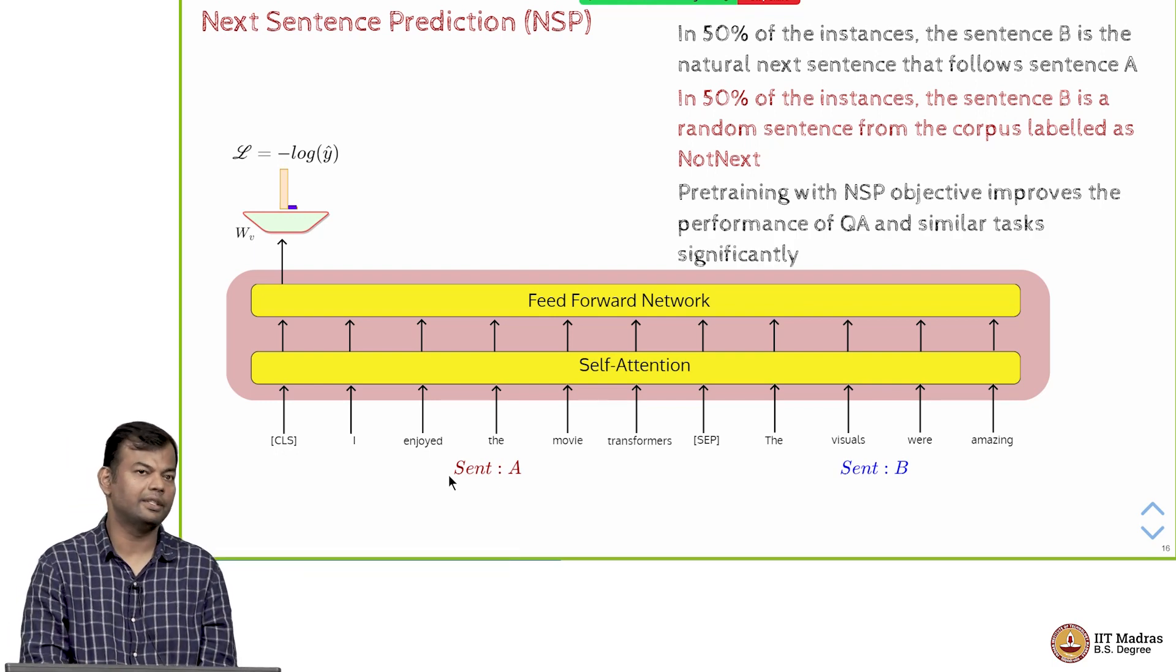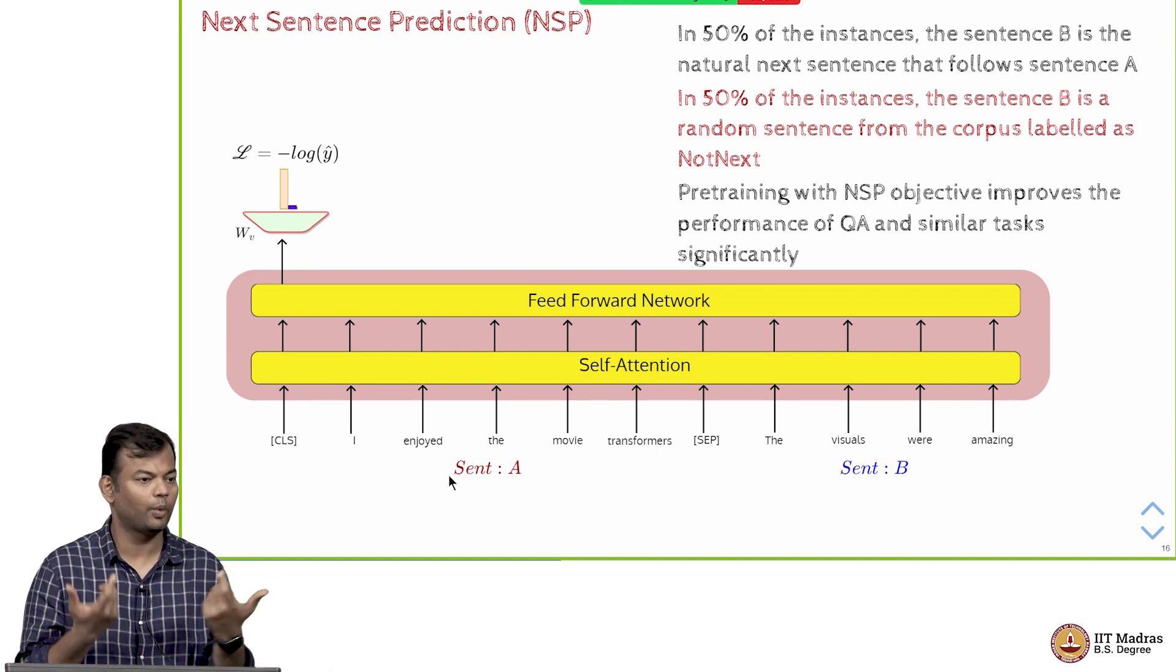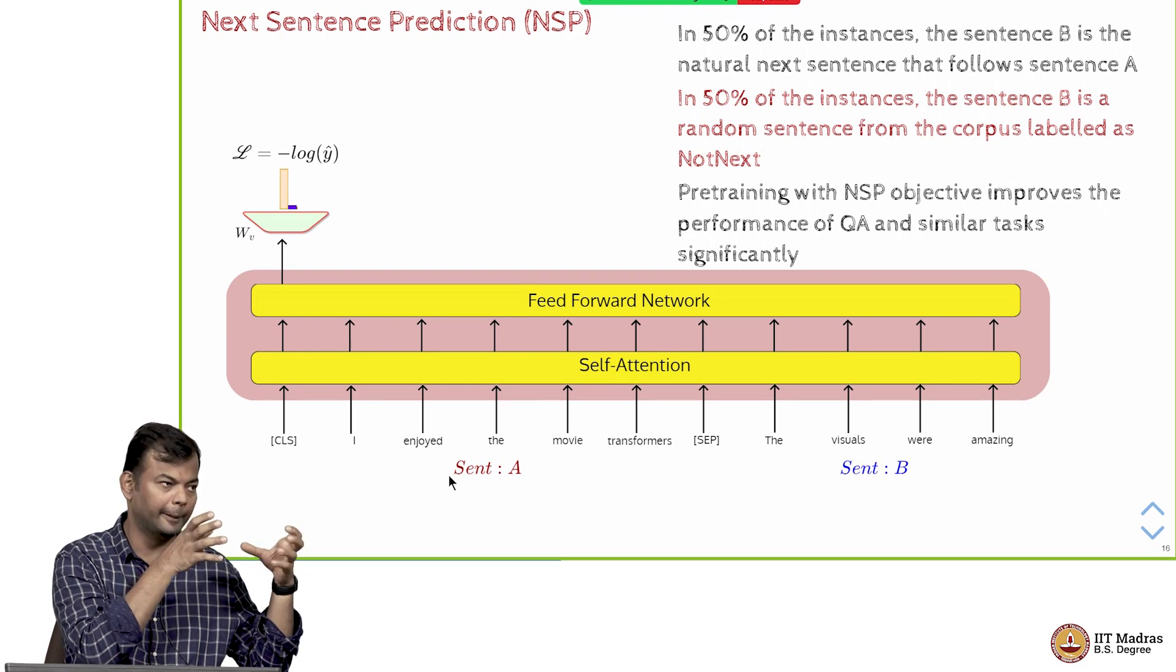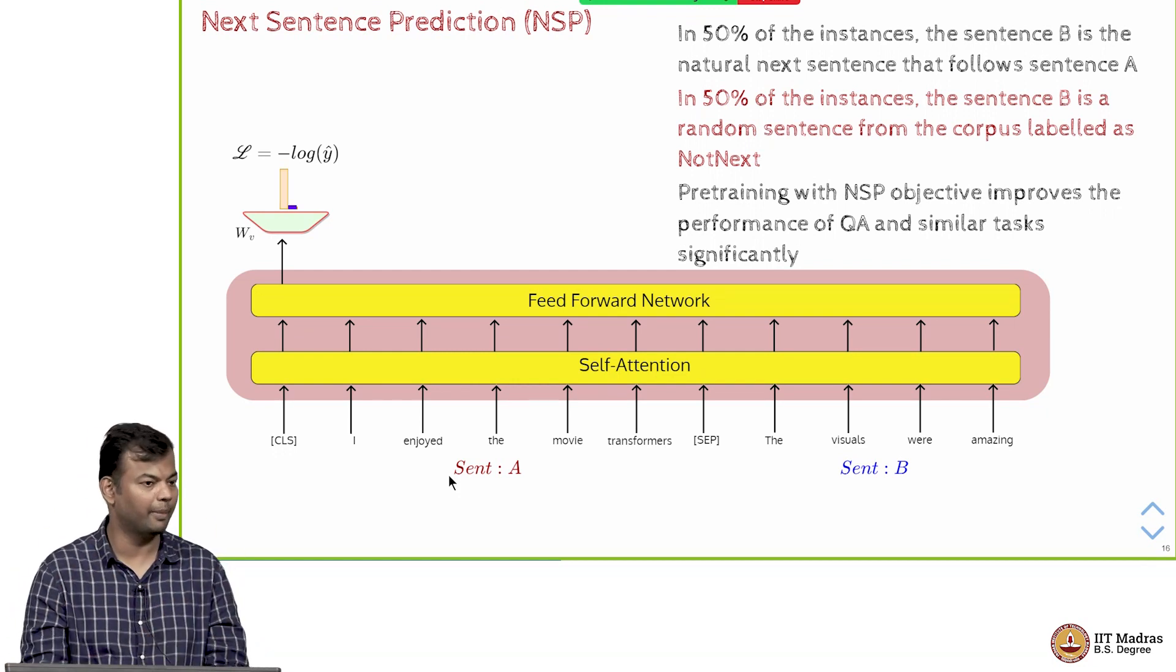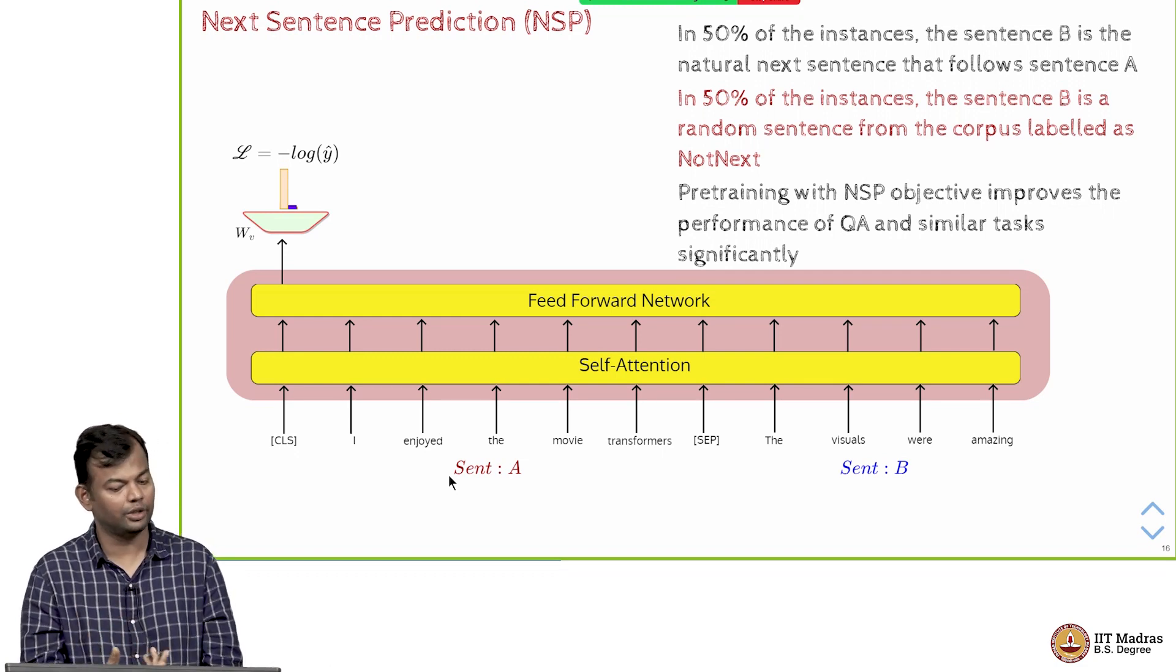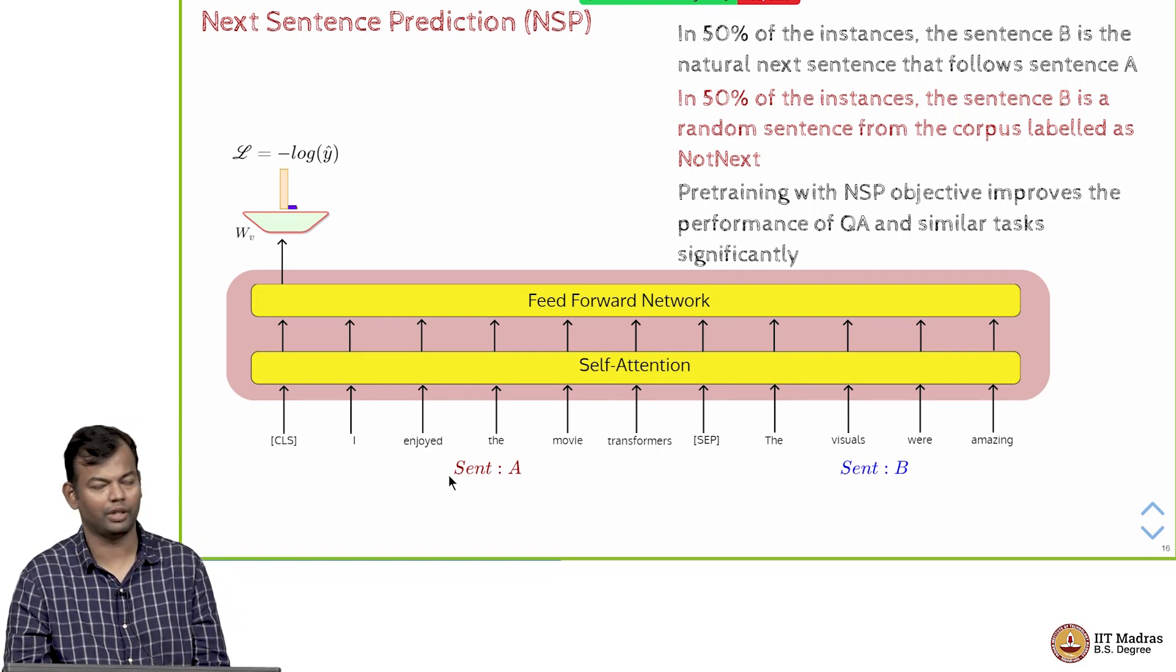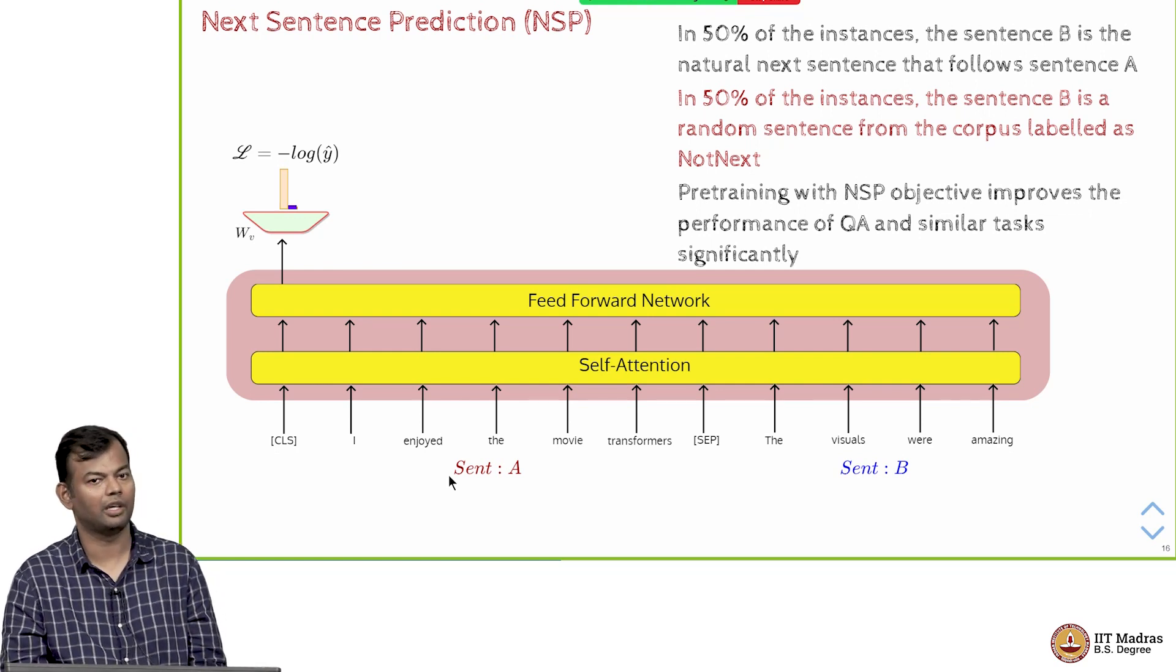They saw that in tasks which require pairs of text like question answering, you have the passage, you have the question and then you want to predict the answer, or textual entailment where you have the original sentence then the claim and you want to see whether this is entailed by the other. These kind of two sentence or two sequence problems, this next sentence prediction loss was helpful. But these were very early findings. After that almost within a year several works showed that this NSP objective is not really benefiting much in downstream tasks.